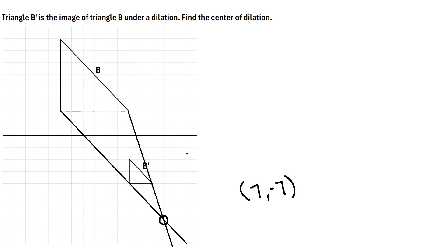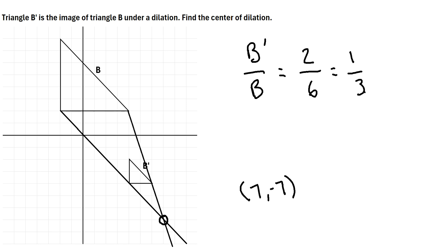That's just a way to do it graphically. To verify that we got the right answer, we can use the scale factor — that's just the ratio of one side of one figure to the same side of the other figure. Going from B' to B: the bottom side of B has a length of two, and the same bottom side of the larger triangle has a length of six. So two over six reduces to one-third. The scale factor from B to B' is one-third, meaning B' is one-third as large as B.